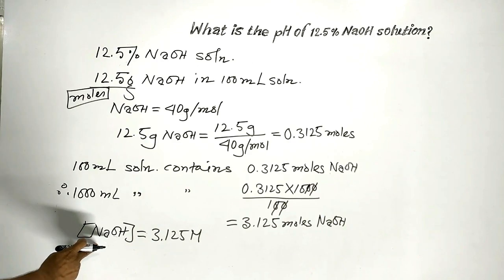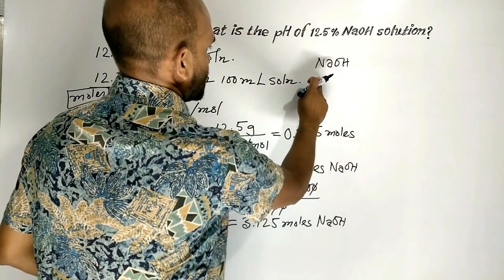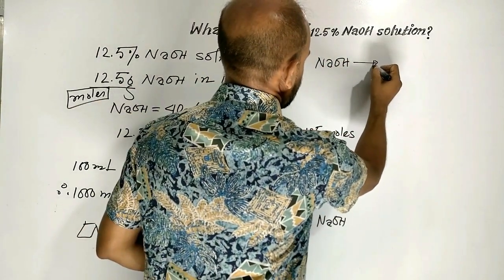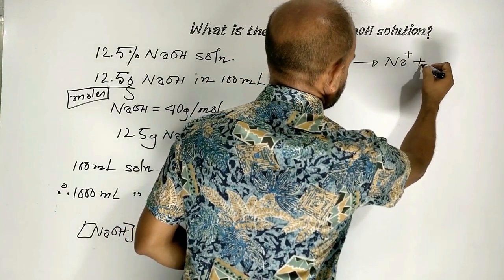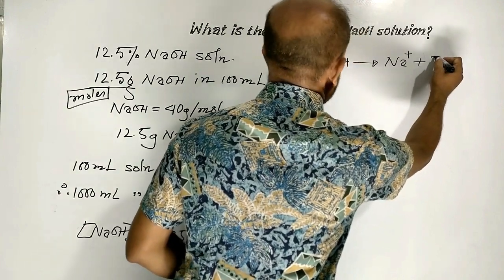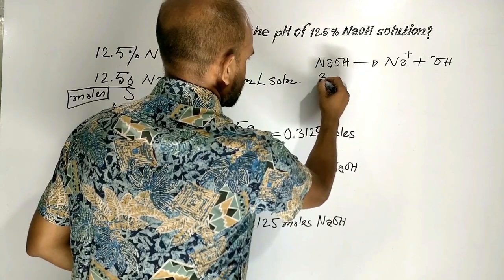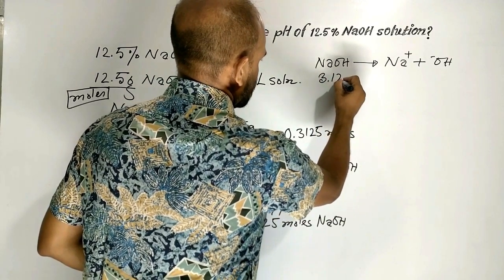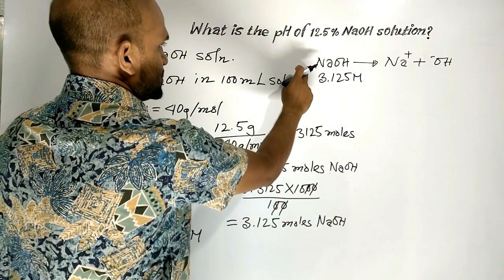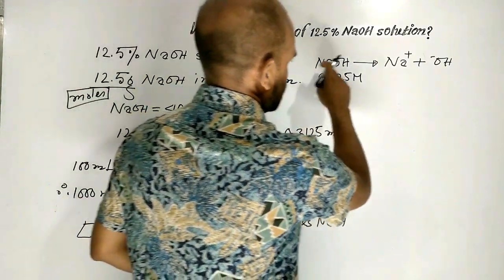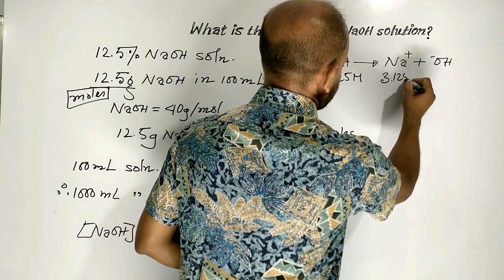Sodium hydroxide is a strong electrolyte, so it ionizes fully to form sodium ions and hydroxide ions. As it dissociates 100%, the concentration of hydroxide ions is 3.125 molar.